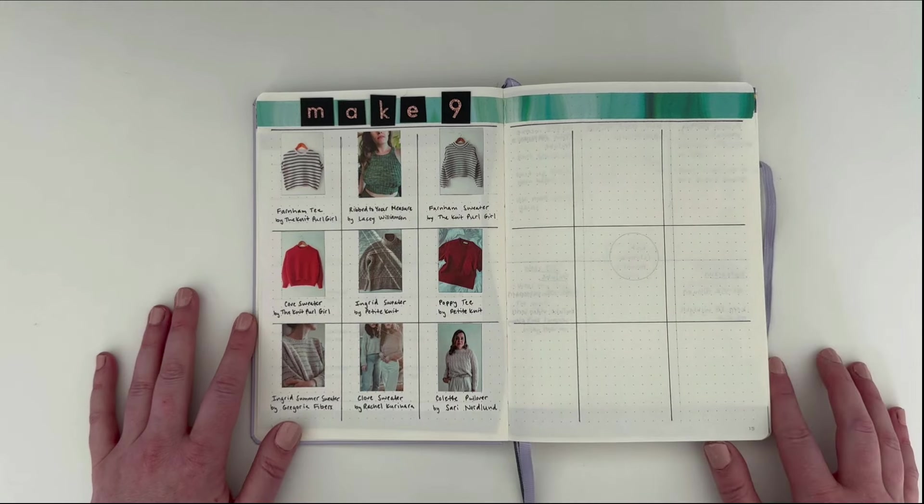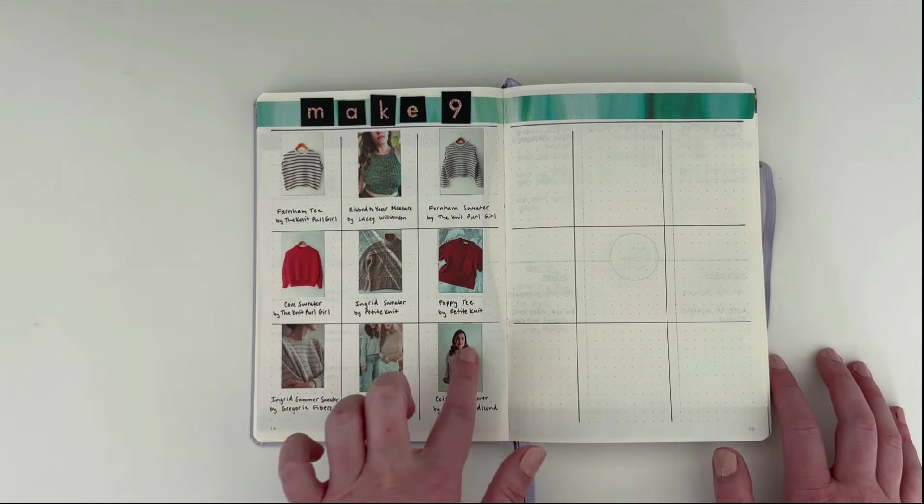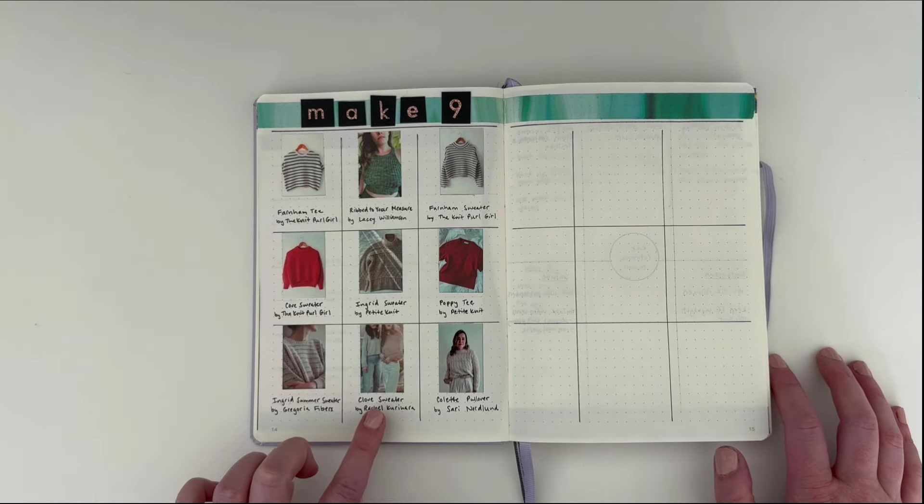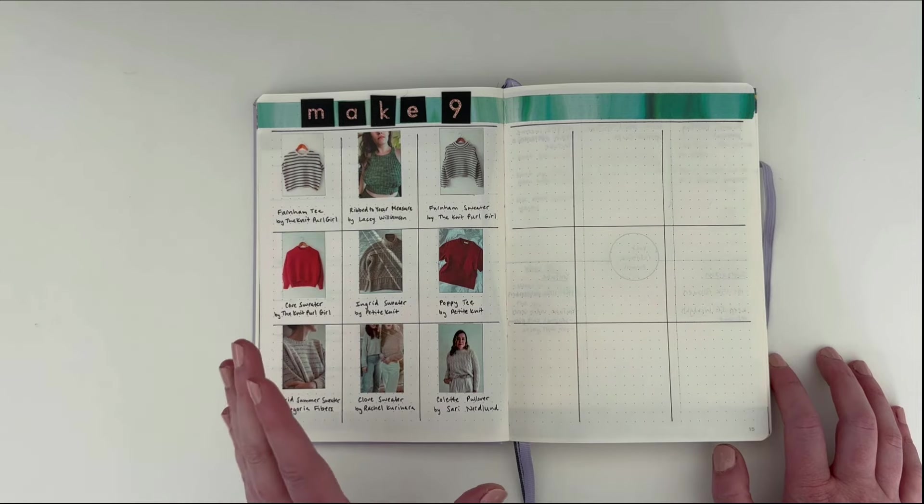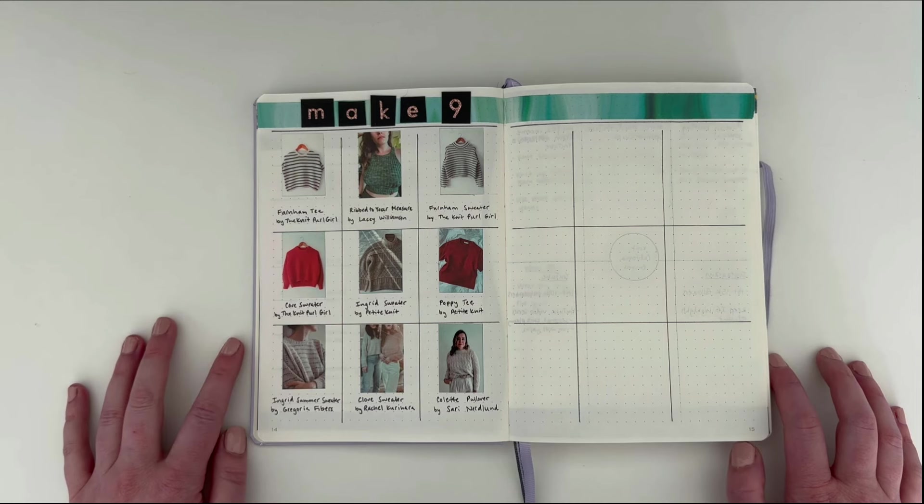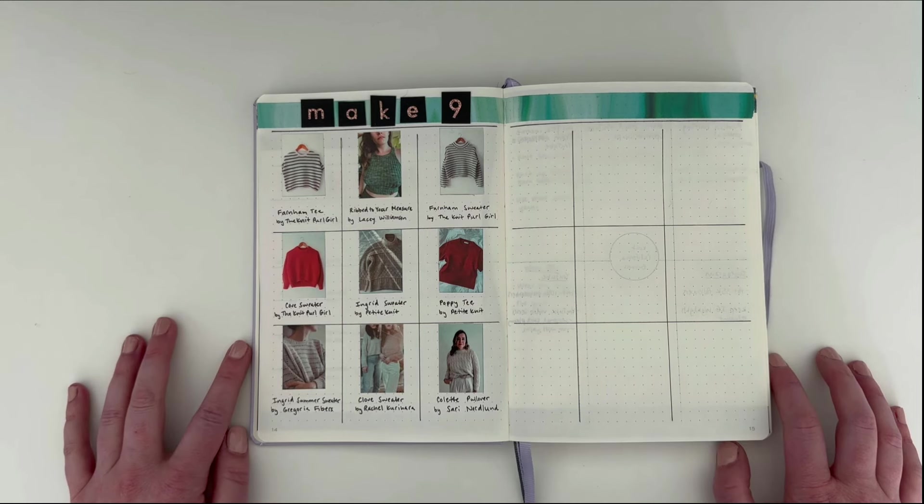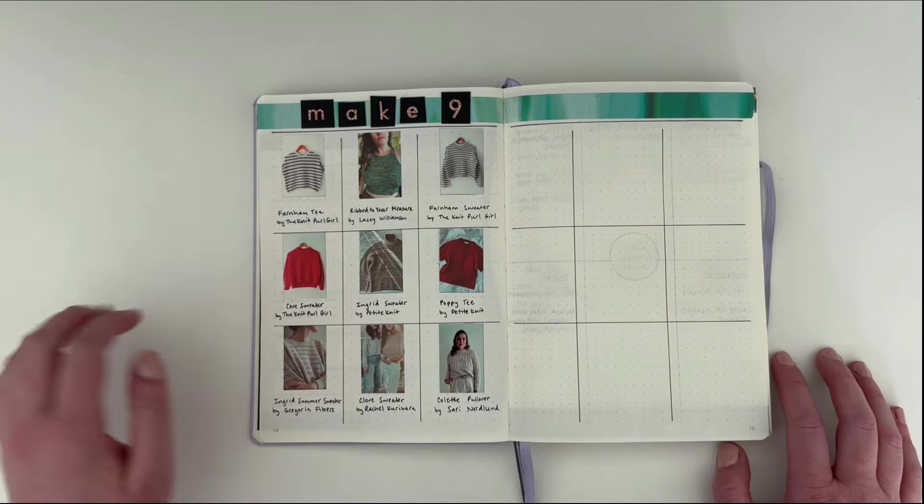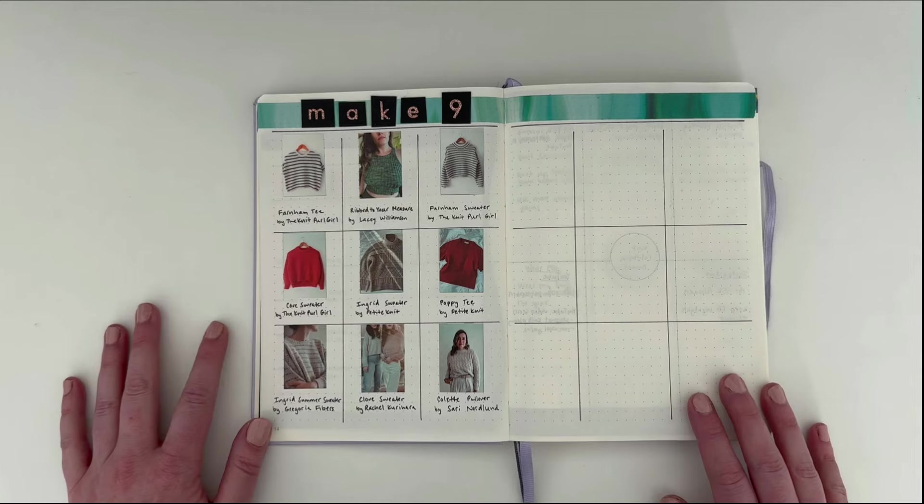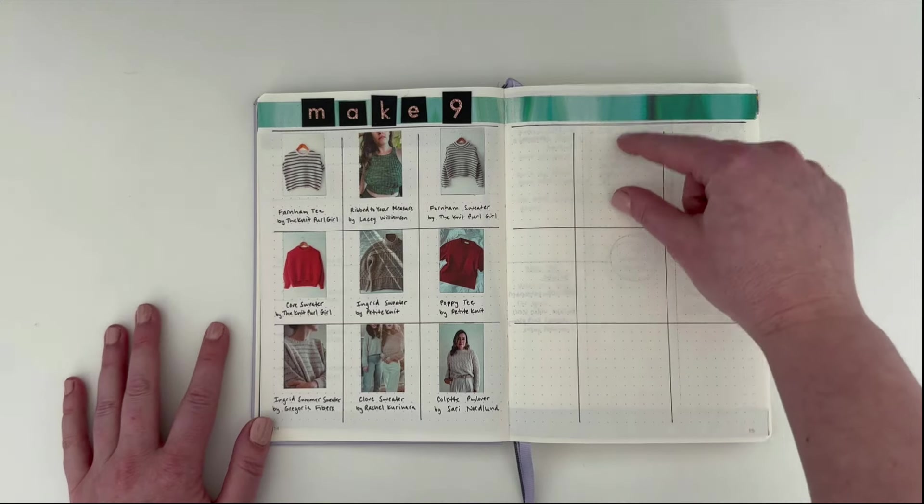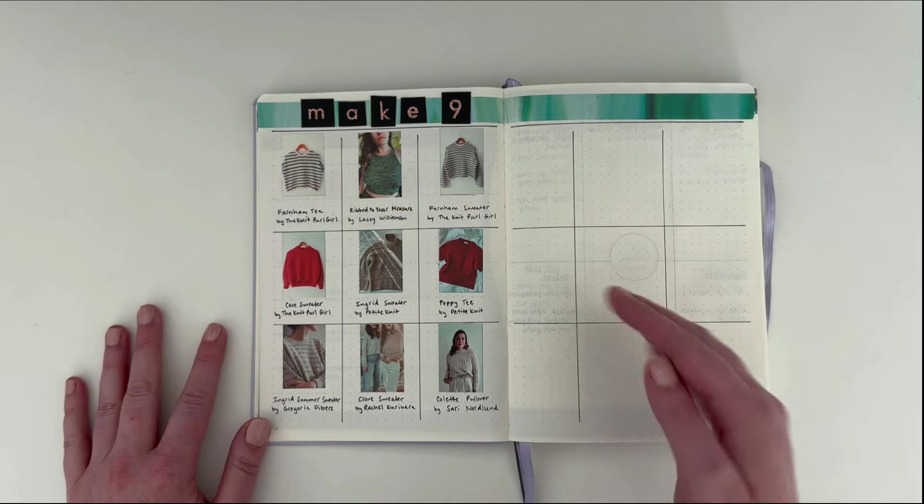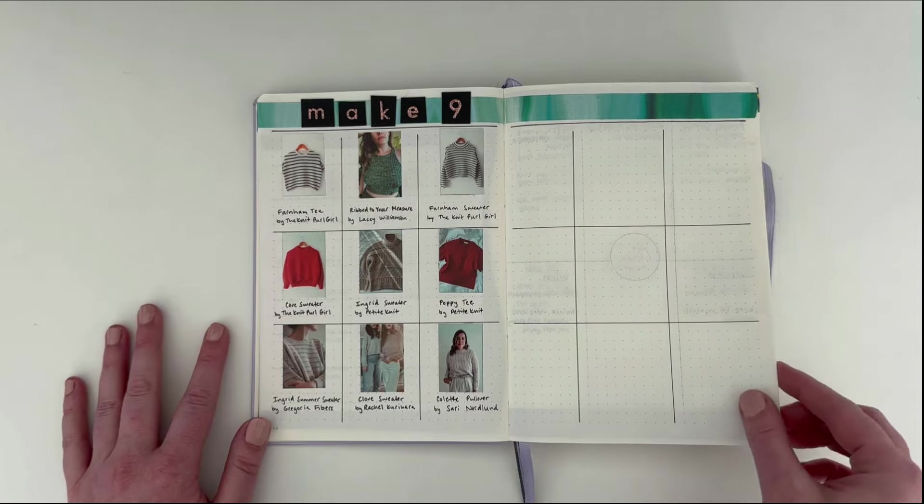Next is my make nine. These are the photos from the Canon Ivy photo printer that I stuck in here. I just put four on one sheet and then cut them out to this size. These are the nine patterns on my make nine for this year that I would like to complete. So I've got them all laid out over here. And then on this side, when if slash when I complete any of them, I'm going to put my finished object photo over here. And so hopefully by the end of the year, this will all be completed.